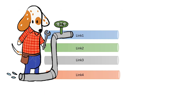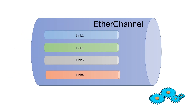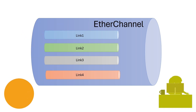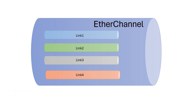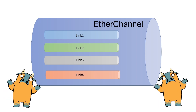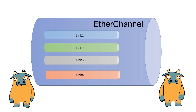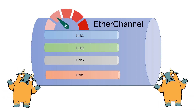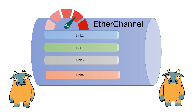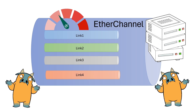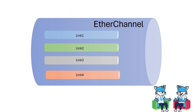An EtherChannel is a group of links that work together as a single link. Administrators use EtherChannels for various reasons. The two most common reasons are they offer higher bandwidth and provide redundancy for critical network resources. Let us understand both reasons through an example.